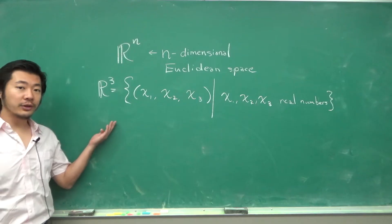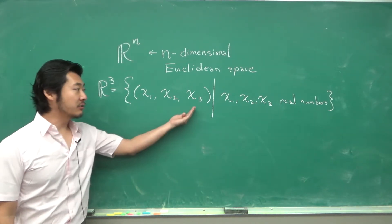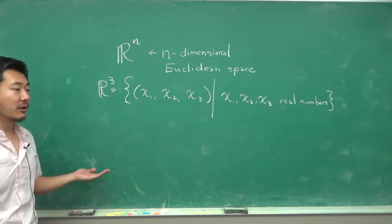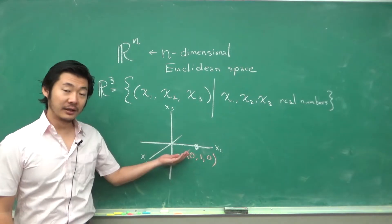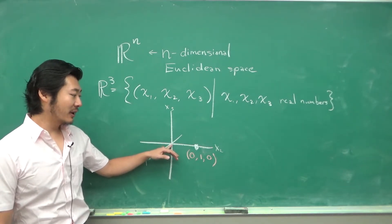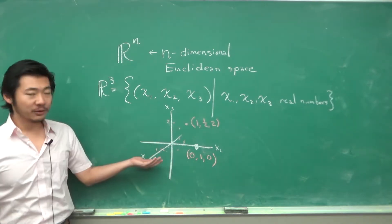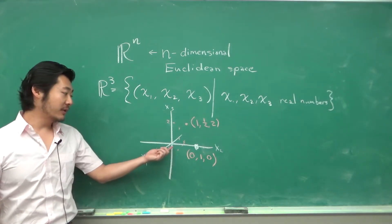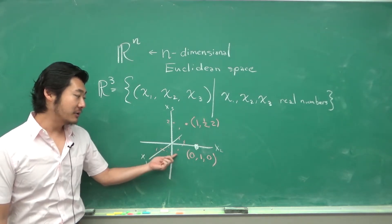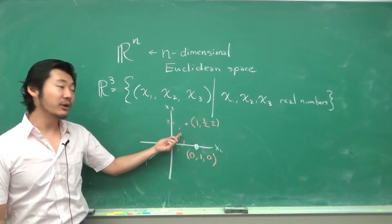For instance, R3 is the set of points described by three real numbers, so a typical point in R3 could be something like this point, which goes zero units in the x1 direction, one unit in the x2 direction, and zero units in the x3 direction. Or a point that goes one unit in the x1 direction, a half unit in the x2 direction, and two units in the x3 direction.